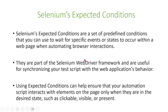Using expected conditions can help ensure that your automation script interacts with elements on the page only when they are in the desired state. For example, when certain things are clickable, or when certain elements are visible, or when certain things are present.